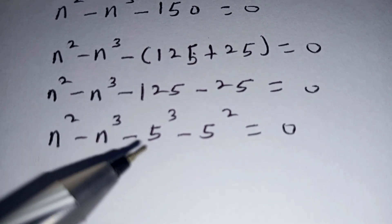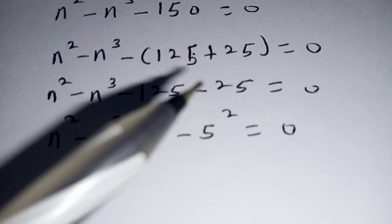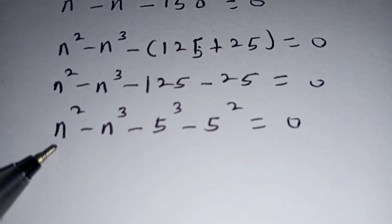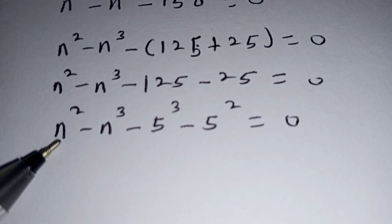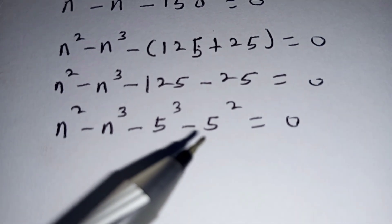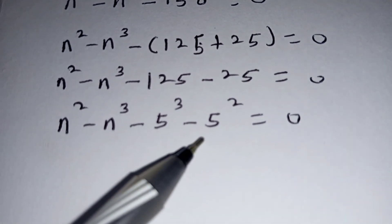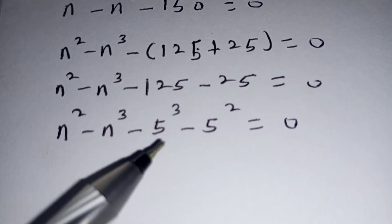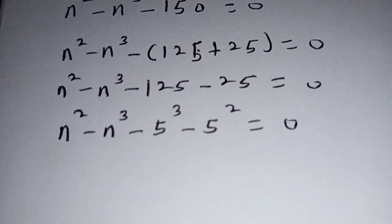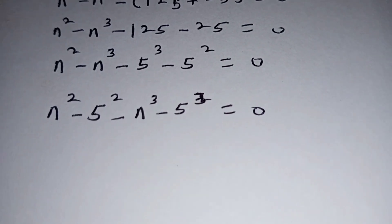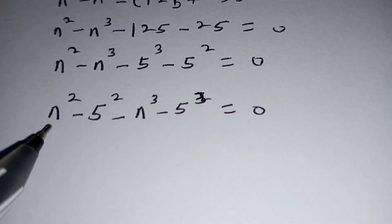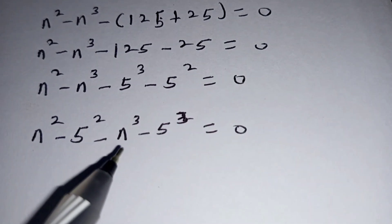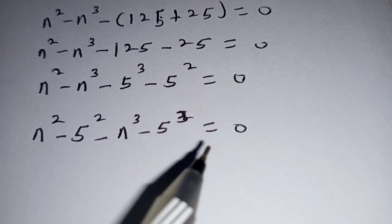Now 125 is the same as 5 cubed and 25 is the same as 5 squared. So we group the terms with n squared with the term with 5 squared, and the term with n cubed with the term with 5 to the power 3, to obtain: n squared minus 5 squared minus n cubed minus 5 cubed is equal to 0.